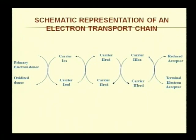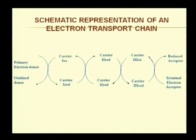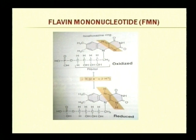Respiratory metabolism yields the maximum number of ATPs. This schematic figure represents an electron transport chain showing the sequential oxidation and reduction of various carriers. These carriers are present in the membrane of bacteria and the inner membrane of mitochondria. They are oriented in a specific manner so that ultimately the terminal electron acceptor is reduced.